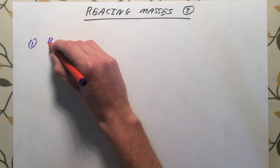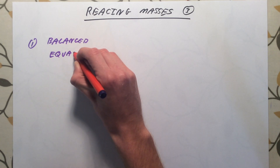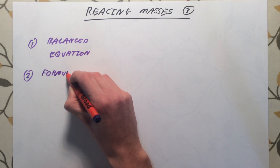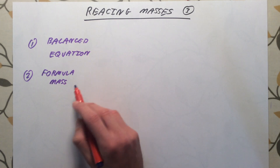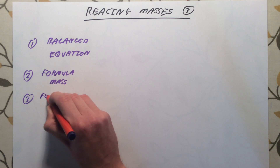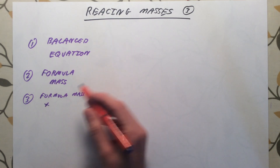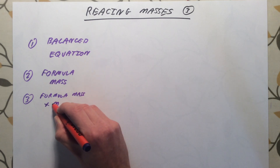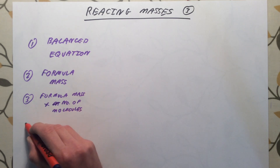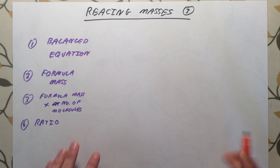The first thing you need to answer these is a balanced equation for your reaction — if you do not have a balanced equation you cannot answer these questions. The second thing you need is the formula mass, or the formula masses of the chemicals you are interested in. The third thing is to multiply this formula mass value by the number of molecules of that chemical reacting. And the last thing you need to look at is the ratio of the masses you end up with.